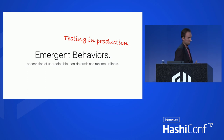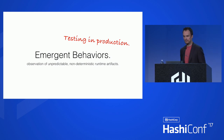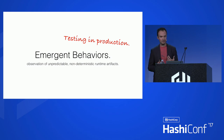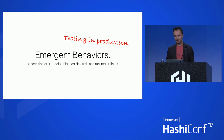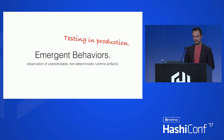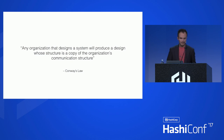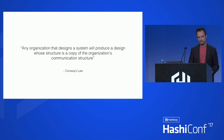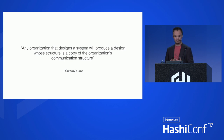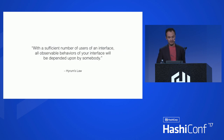One of my favorites is the concept of emergent behaviors. Our distributed systems are more complicated than ever. Microservices have caused an explosion in complexity and make service contracts and availability of peer systems harder than ever to reason about. There are two laws which codify this — the intersection of these laws is what produces emergent behaviors. The first is Conway's law: any organization that designs a system will produce a design whose structure is a copy of the organization's communication structure.